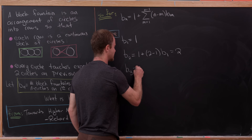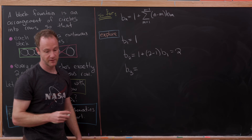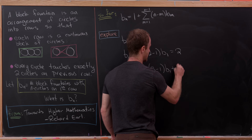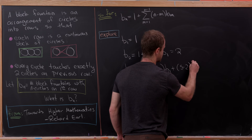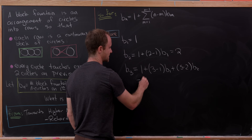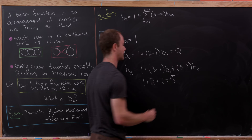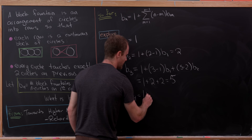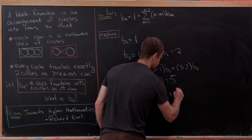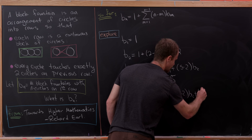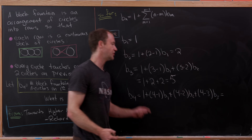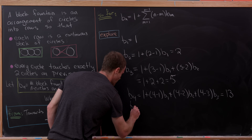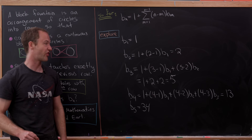For b_3: pictures gave 5. The recursion gives 1 + (3 minus 1) times b_1 + (3 minus 2) times b_2 = 1 + 2 + 2 = 5. For b_4: 1 + 3·b_1 + 2·b_2 + 1·b_3 = 13. And for b_5, after doing all the calculation, we get 34.